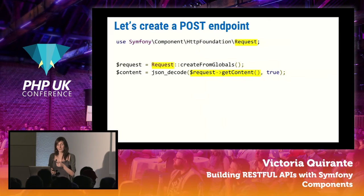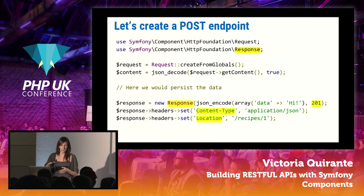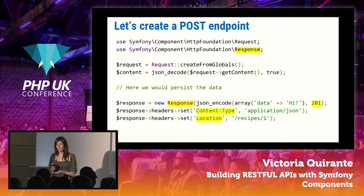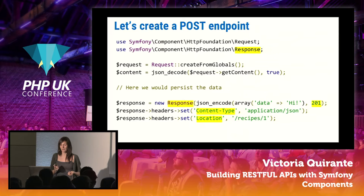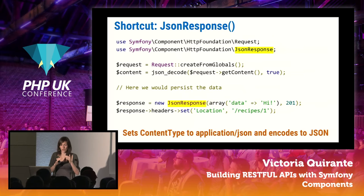We create the request from globals, do whatever we want with the data — persist, whatever — and then build a response where we can easily set the status code and headers like content-type and location. If you want a shortcut, you can also use JsonResponse, which will set the content type and encode to JSON, saving you an extra line. With only a few lines, you already have your endpoint.